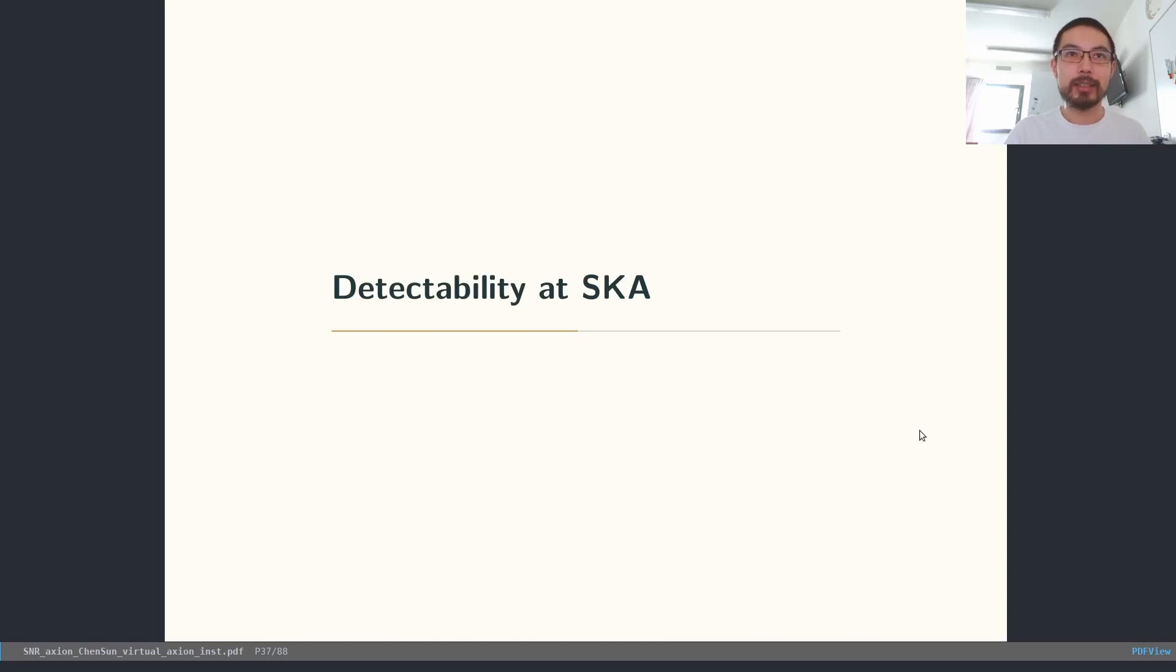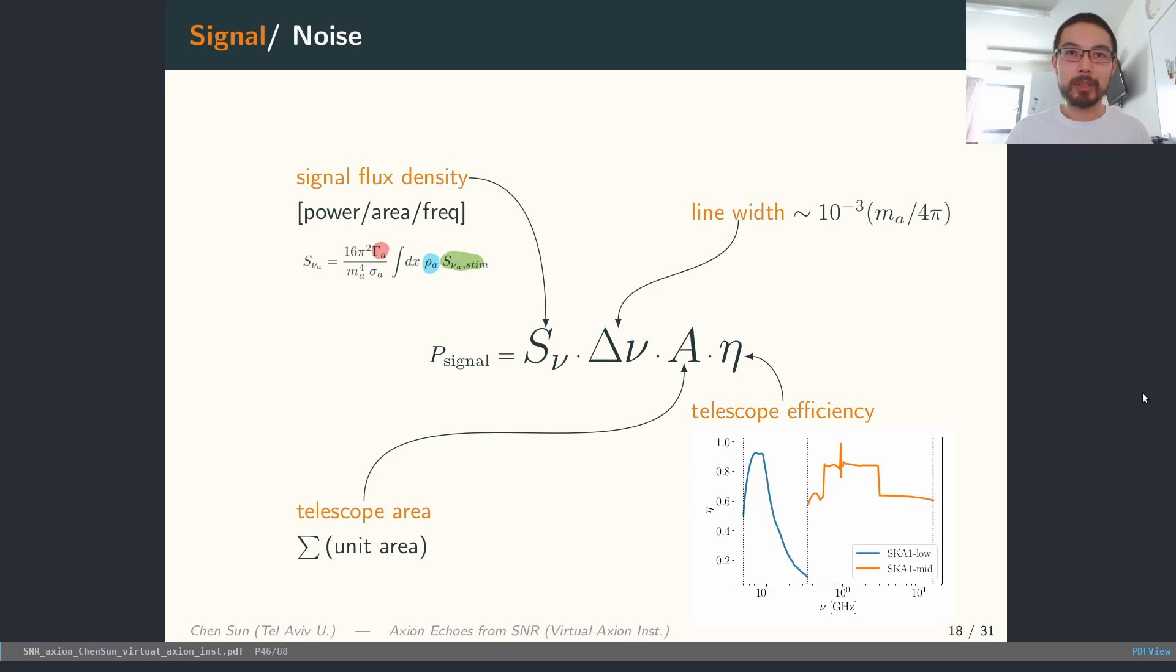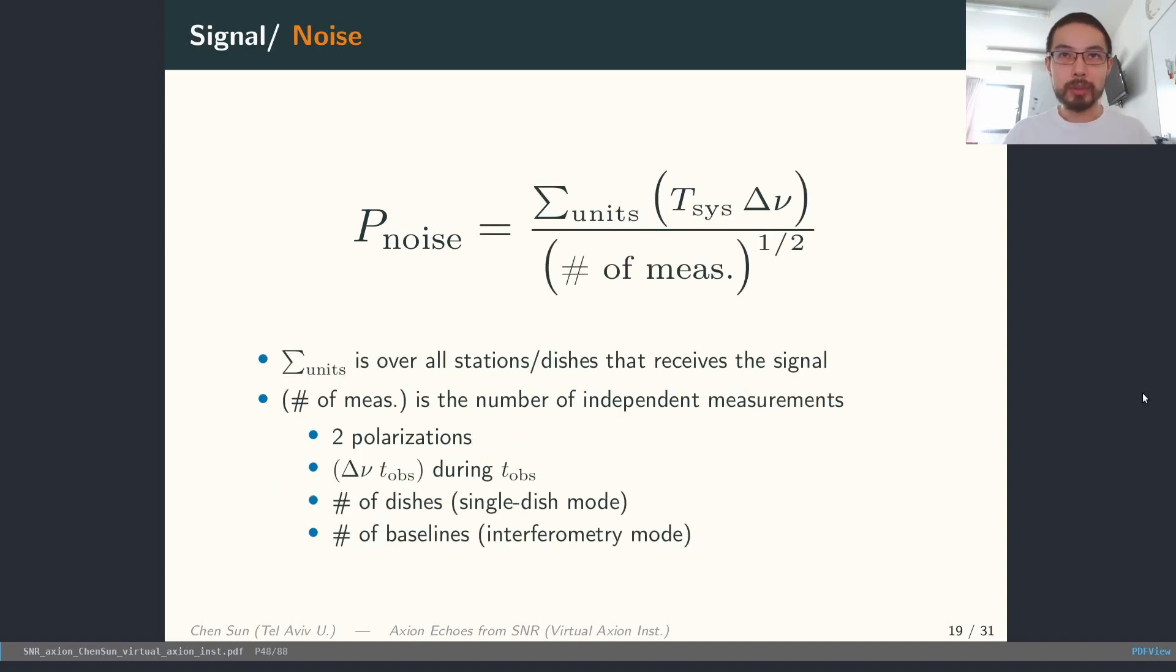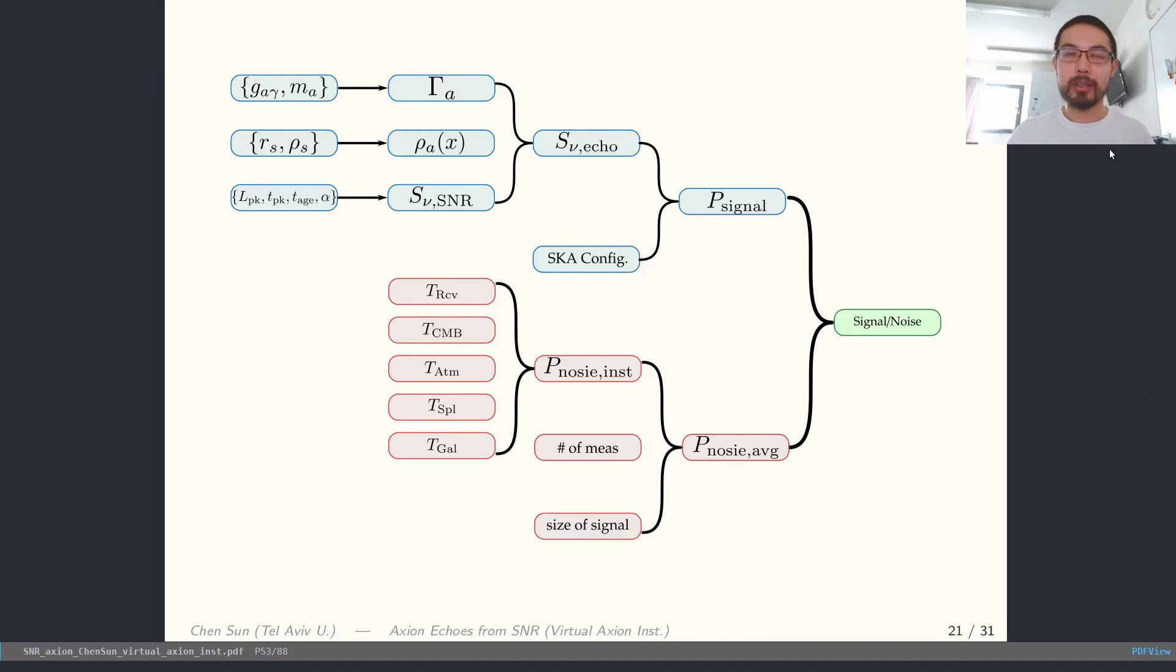Now let's look at the detectability at SKA. Roughly speaking, we convert the echo flux density to the power of our signal. Then we compute the noise power by taking into account the temperature of the CMB, the atmospheric temperature, the galactic temperature, as well as the receiver temperature and spillover. Put this together, we get the averaged noise power of the whole telescope array. So this is a pipeline to show how we compute the signal power and the noise power.